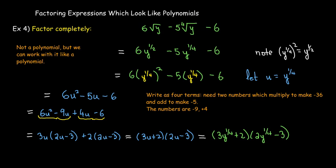So in summary, we can make a u substitution to make a change of variables and take something that is either a very complicated polynomial or something that's not a polynomial at all, make it look like a polynomial and still be able to factor.